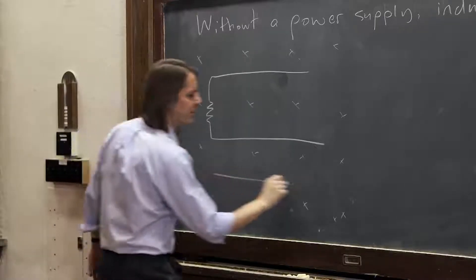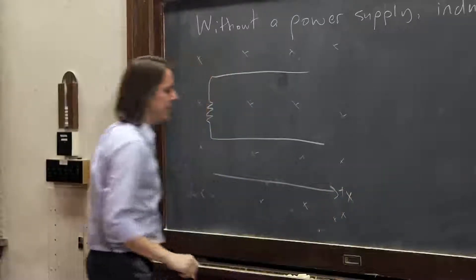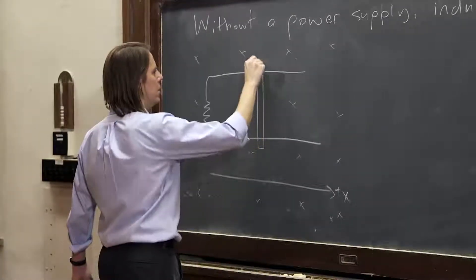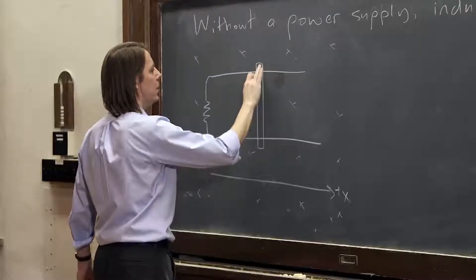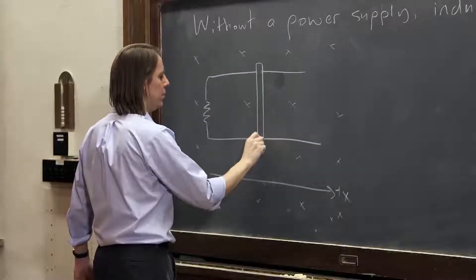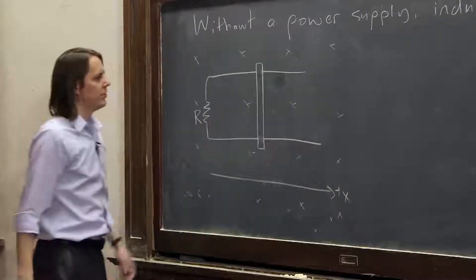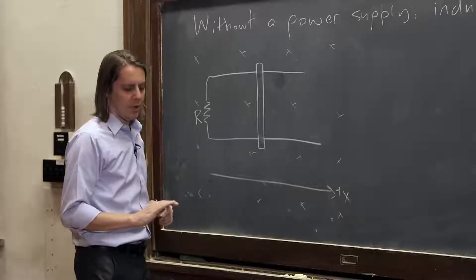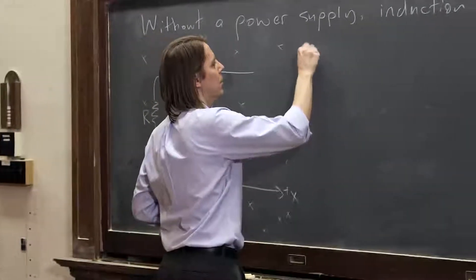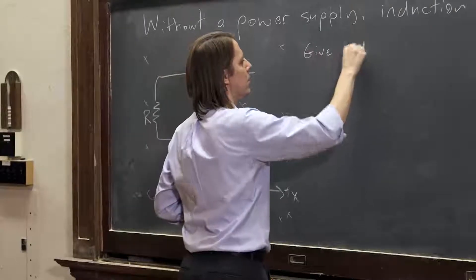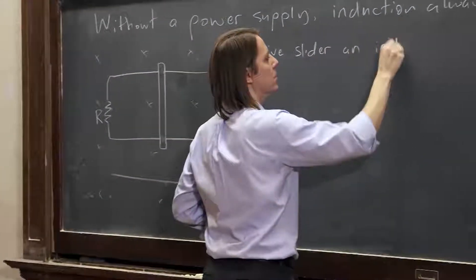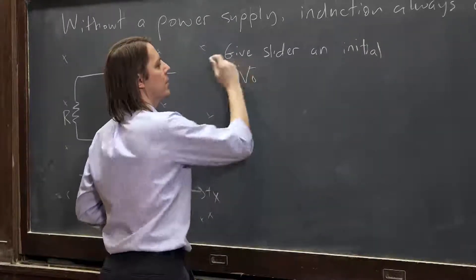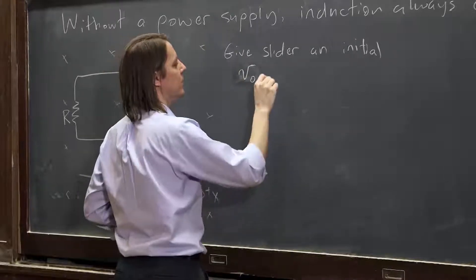We'll imagine that this is the x-axis, and the slider can sit right there, just like before, with some resistance R. So now we're going to do a kinematics problem. We're going to give the slider an initial V0 and see what happens.